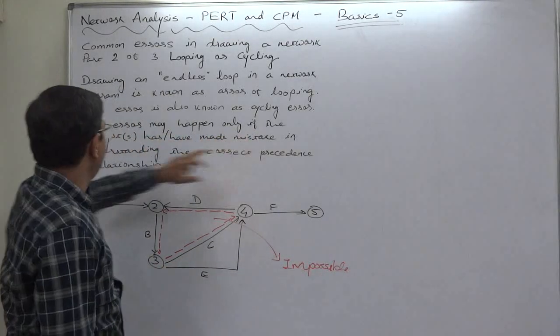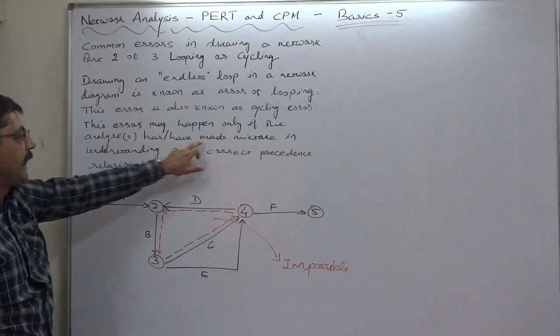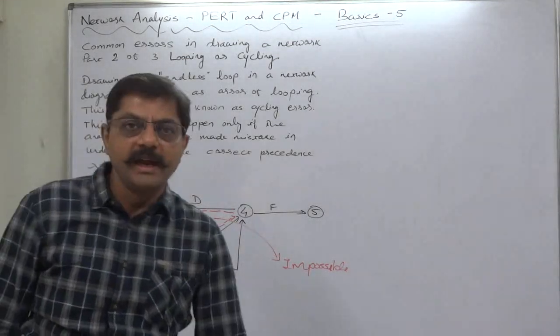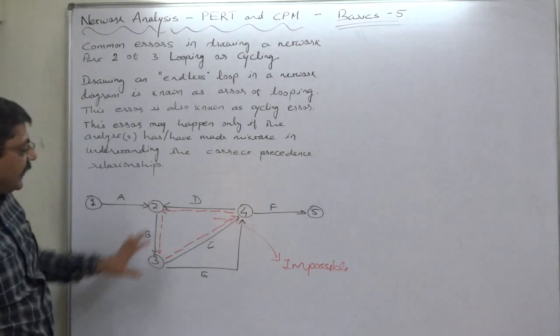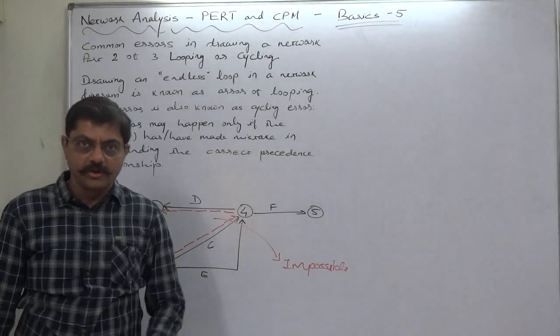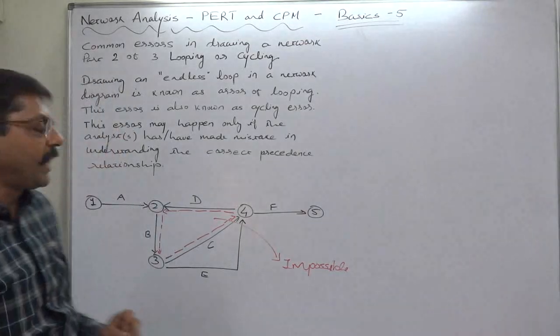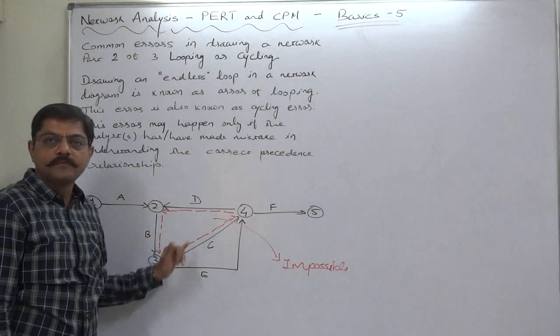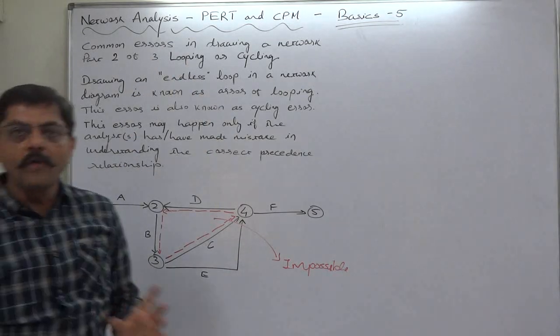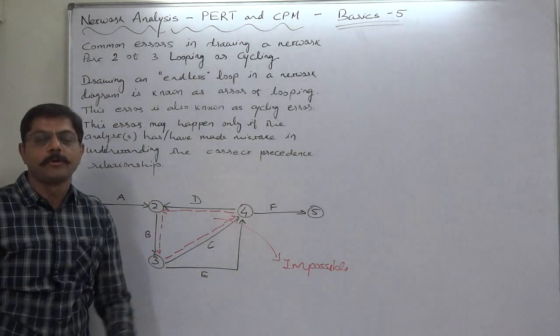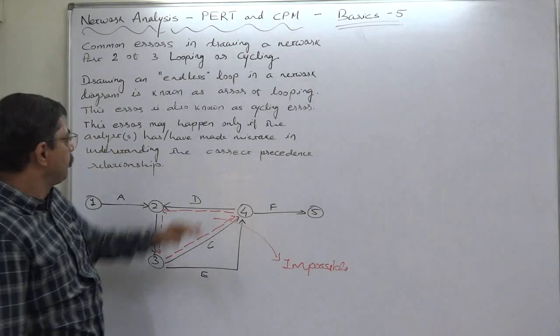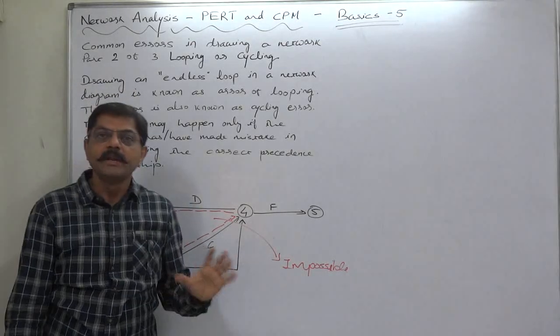This error may happen only if the analyst or analysts has or have made mistake in understanding the correct precedence relationship. I believe that the roots of this kind of error of looping or cycling is not generally in drawing the PERT chart or network diagram, but we can find the root of such kind of error in the basic data of the network diagram or the project where the technicians have explained the precedence relationship between various activities.